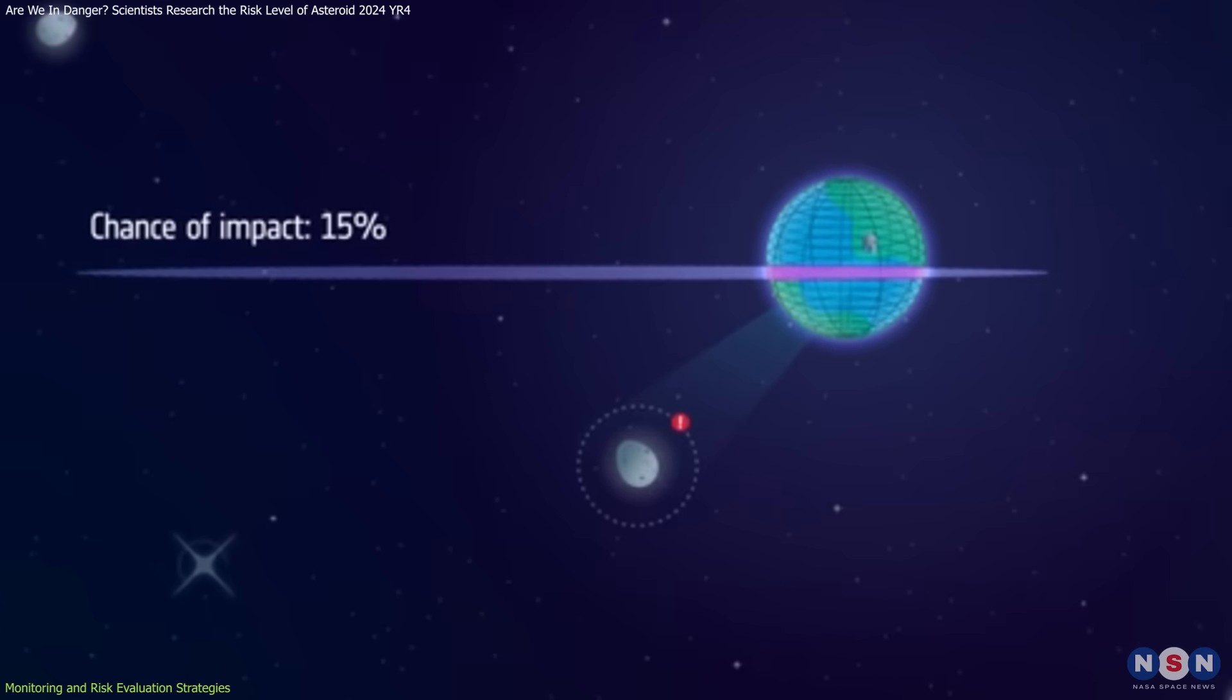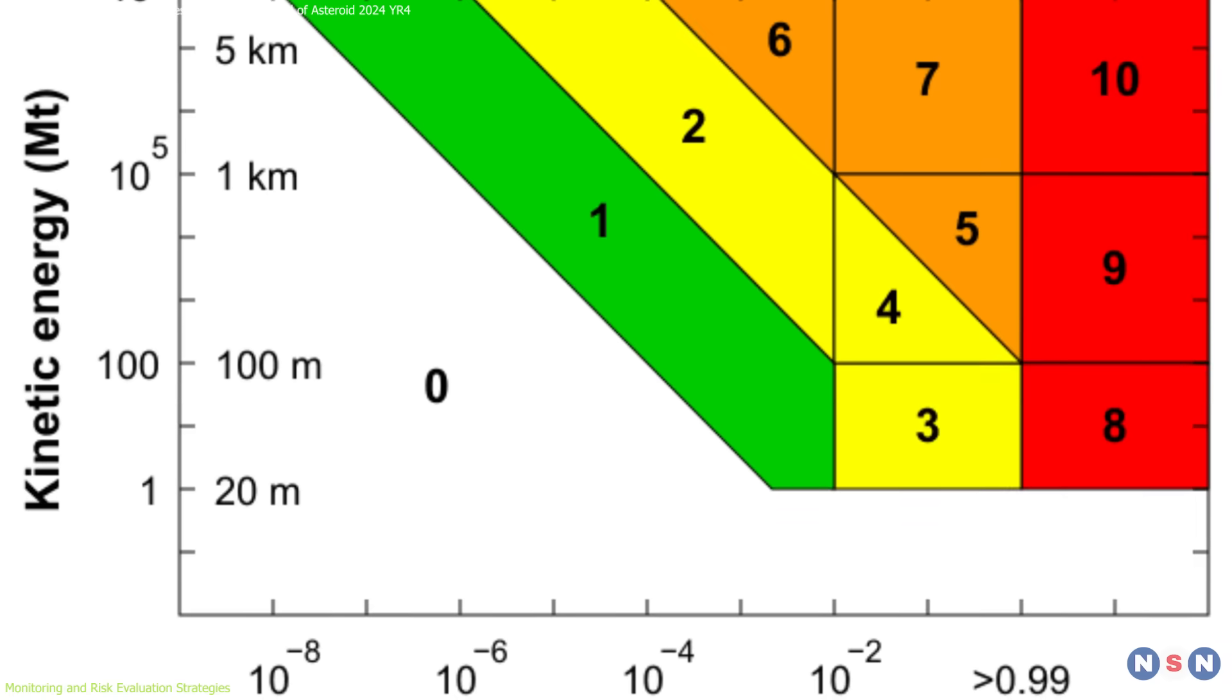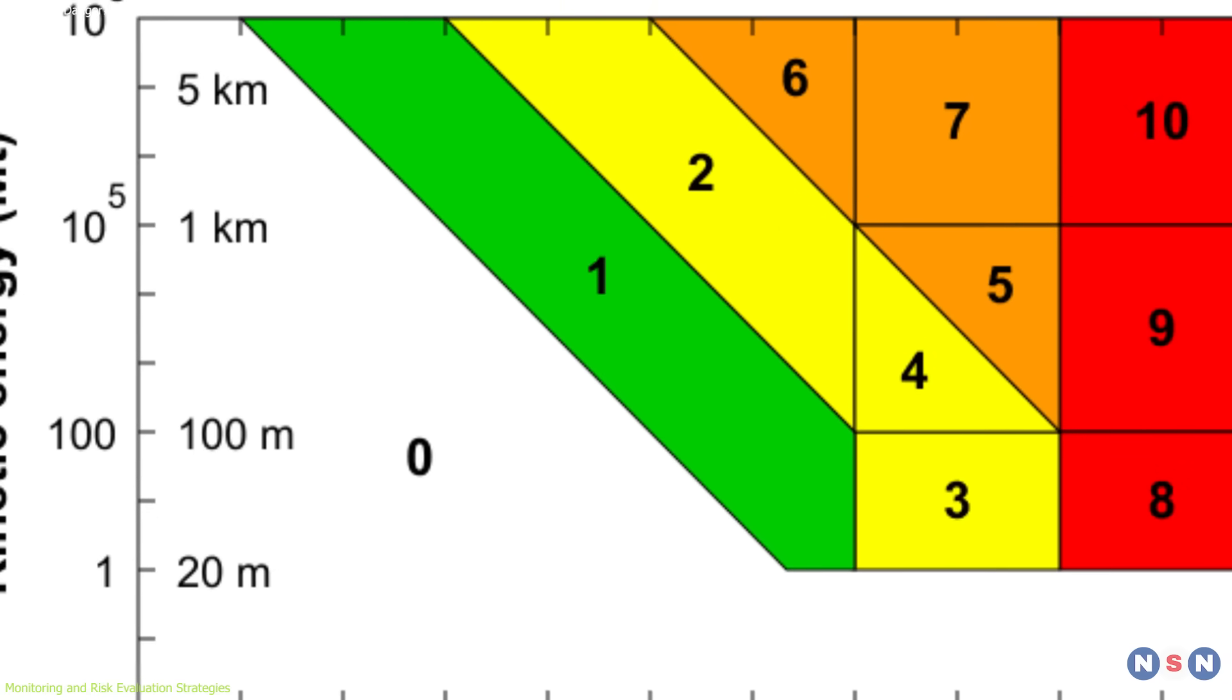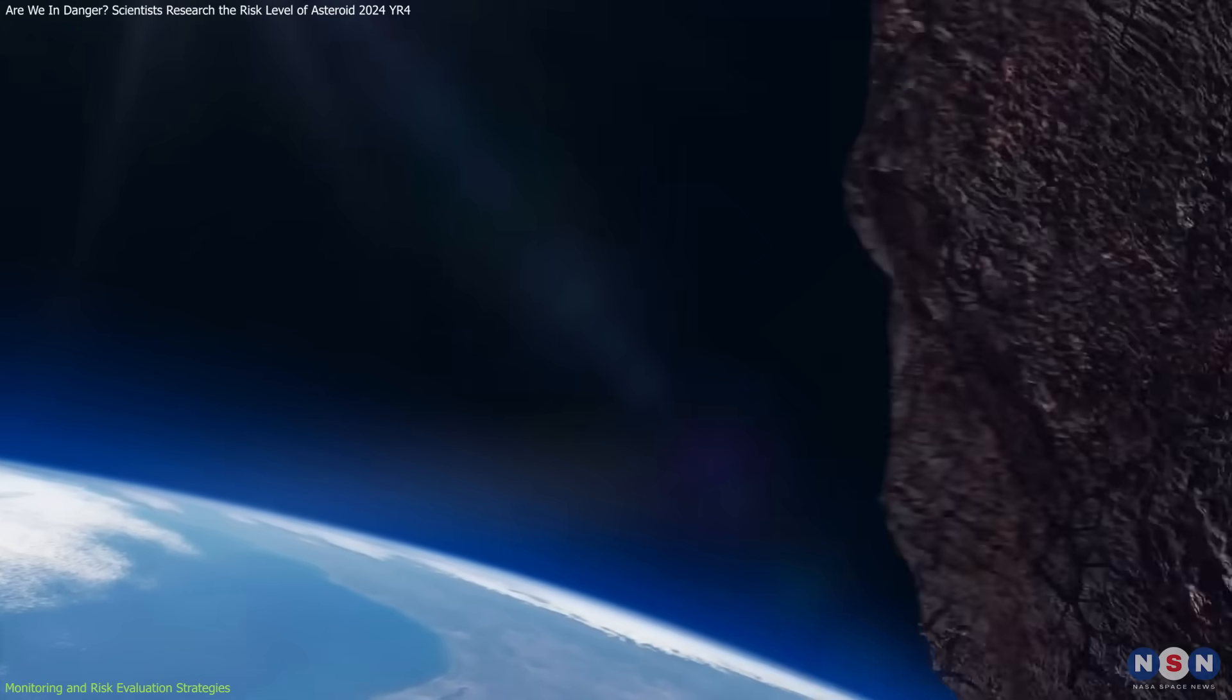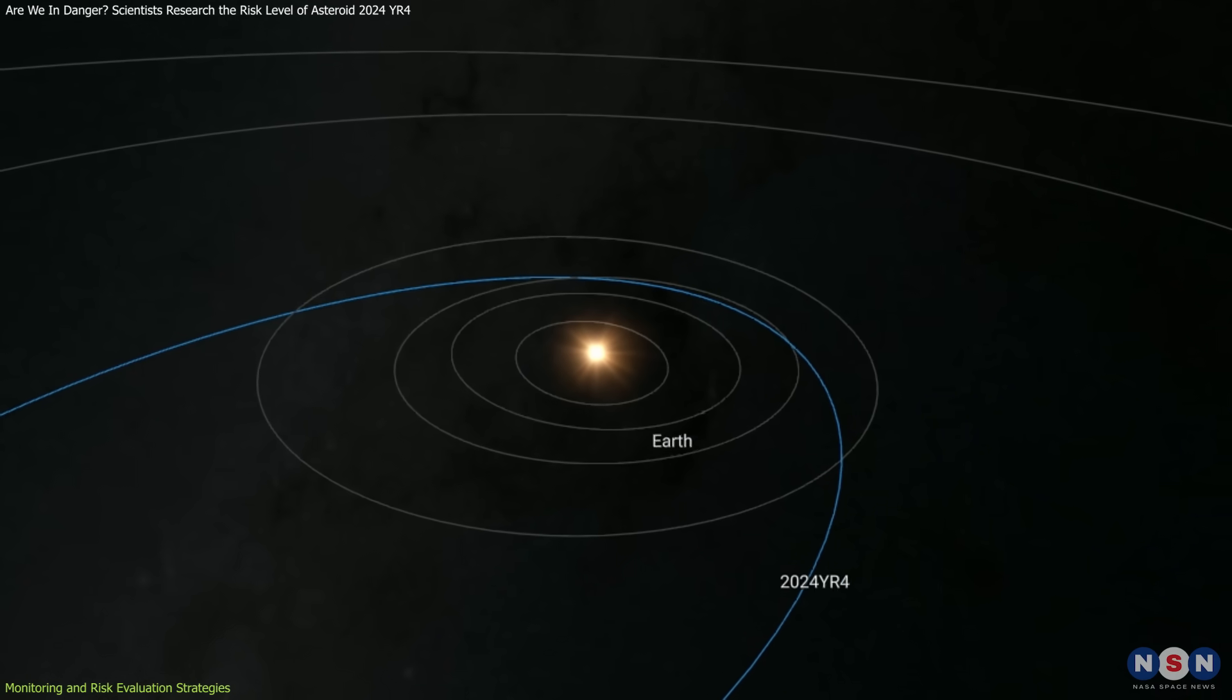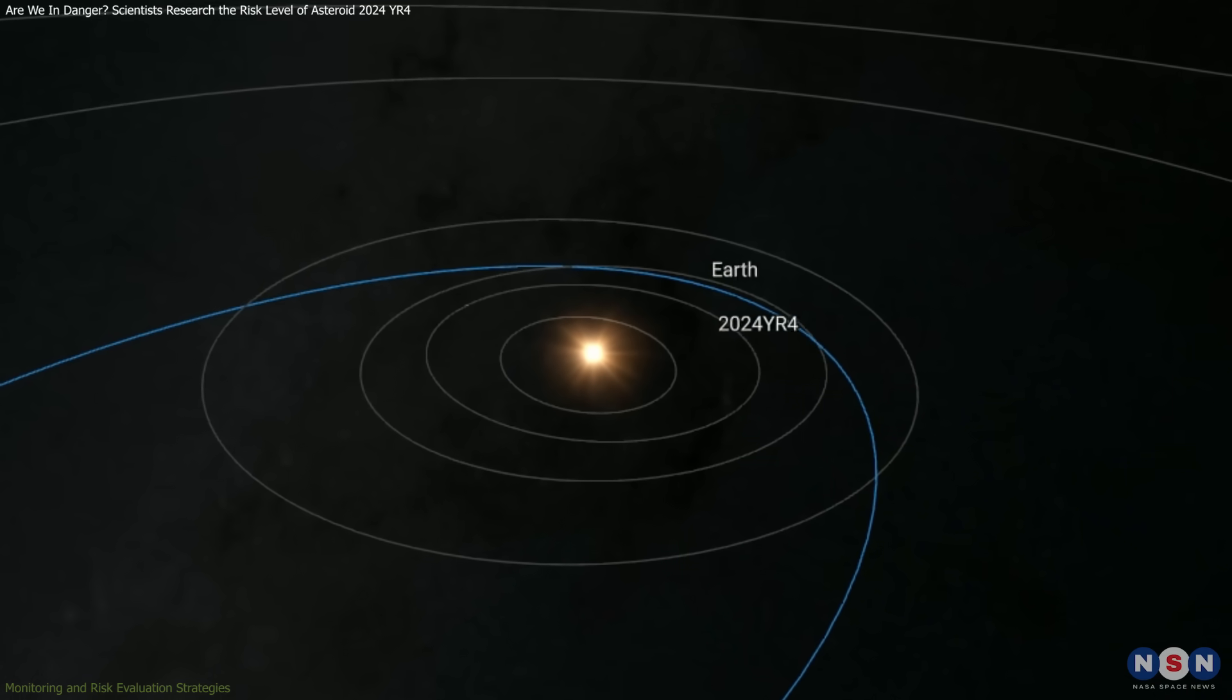Risk evaluation is further enhanced by using tools like the Torino scale. This scale assigns a value based on the likelihood and potential consequences of an impact. While the scale currently indicates that 2024 YR-4 poses a low immediate risk, the dynamic nature of its orbit means that it will be continuously reassessed as new data is collected.